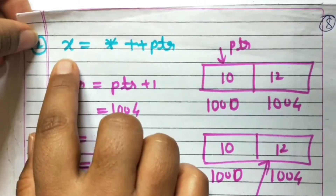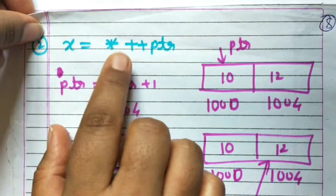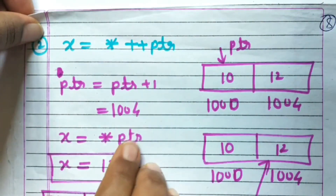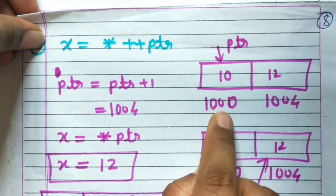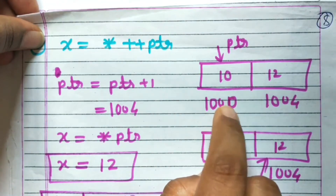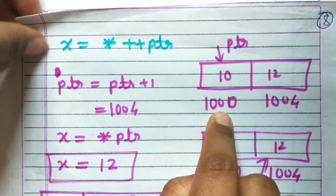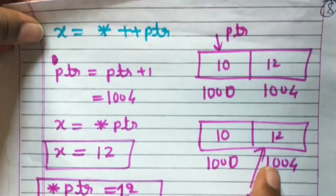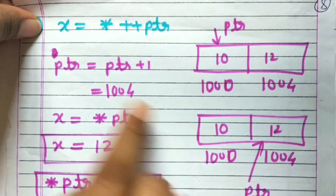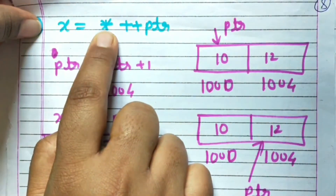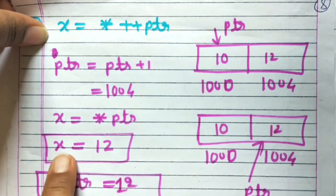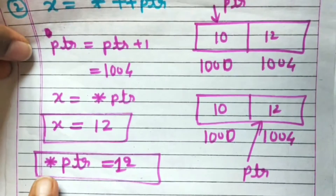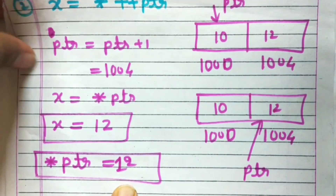Next: x = *++ptr. First, the address is incremented. Previously PTR pointed to address 1000; next it will be 1004. Then the value after the increment operation is assigned to x. The value pointed by PTR is 12, so x = 12, and *PTR is also equal to 12.